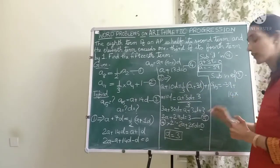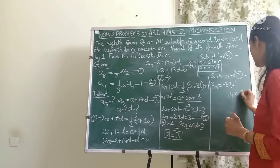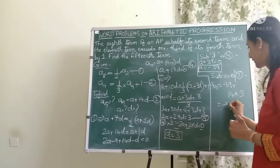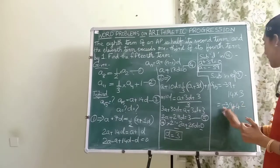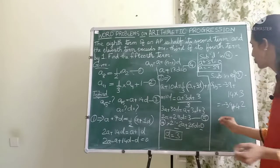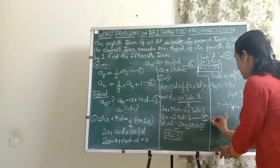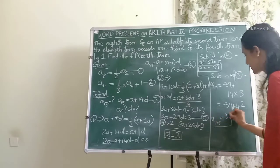So I'll get minus 39 plus 14 times 3 is 42. So minus 39 plus 42 is how much? Definitely 3. So the 15th term is 3.